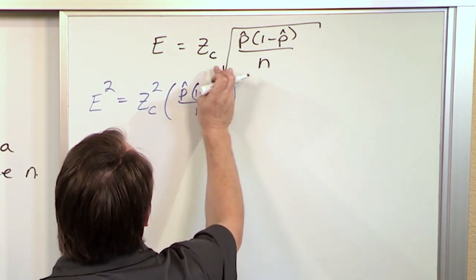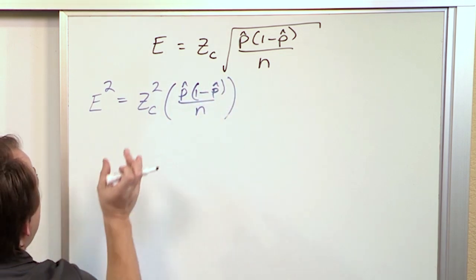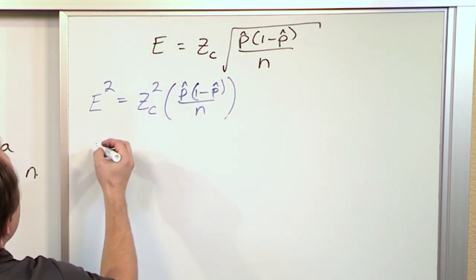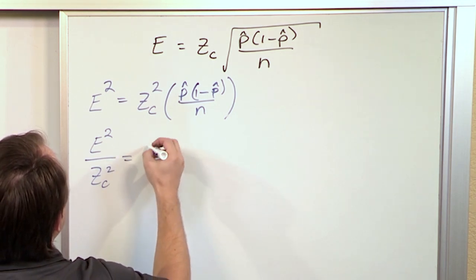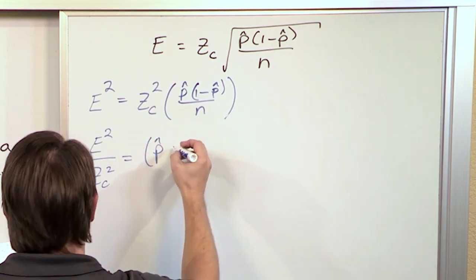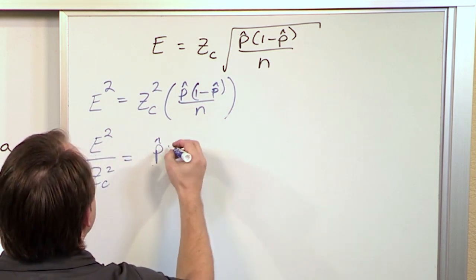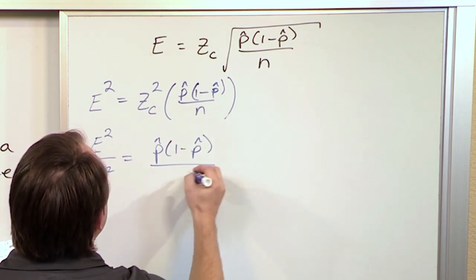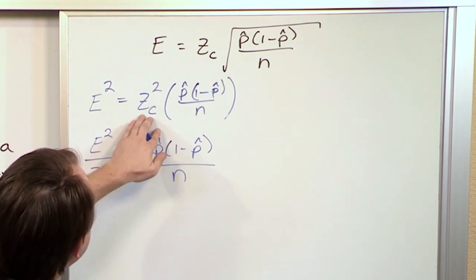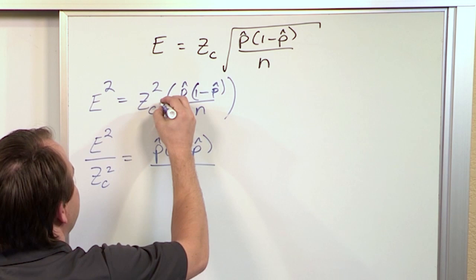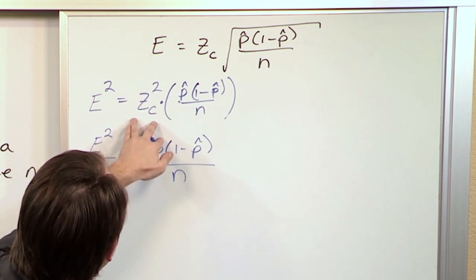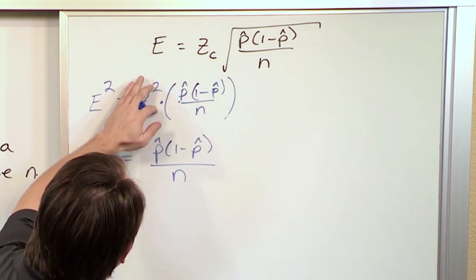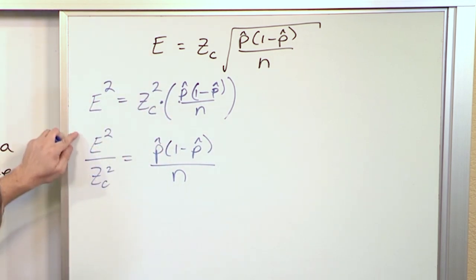Now we want to solve for n. We need to get rid of z_c² that's out front, so we divide both sides by z_c². We get E²/z_c² equals p̂(1-p̂)/n. The opposite of multiplication is division, so we divide both sides of this equation by z_c². On the right-hand side it goes away because we've divided it out.